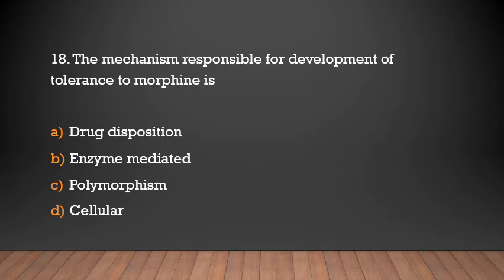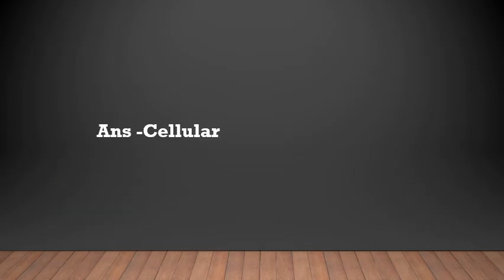The mechanism responsible for development of tolerance to morphine is: drug disposition, enzyme mediated, polymorphism, or cellular. The answer is cellular.